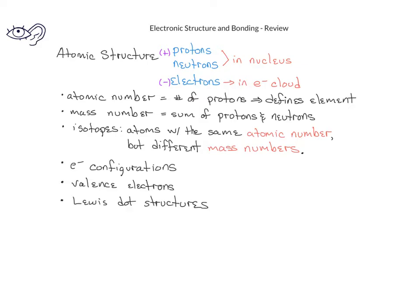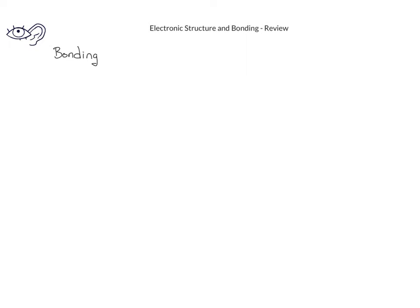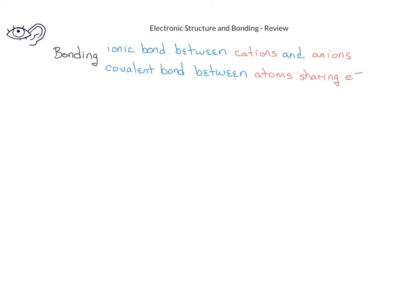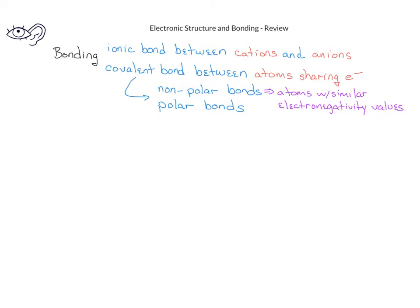You should also recall the ideas of electron configurations, valence electrons, and Lewis dot structures. You should also recall what you know about bonding. This includes ionic bonds, which form between cations and anions. You should also recall that covalent bonds are those bonds that form between atoms that share electrons, and that covalent bonds can be divided into nonpolar bonds or polar bonds. The nonpolar bonds are bonds that form when the atoms have similar electronegativity values, while polar bonds are those that form between atoms with very different electronegativity values. You might want to review your general chemistry notes to refresh your memory about electronegativity values and the trends in electronegativities in the periodic table.